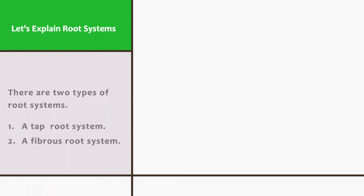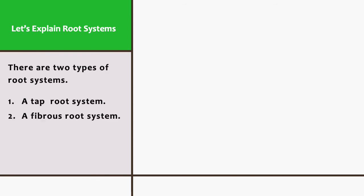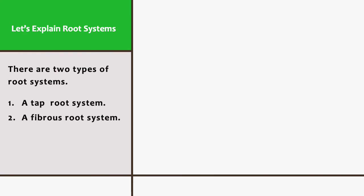Let us now explain root systems. There are two types of root systems: one, a tap root system, and two, a fibrous root system.